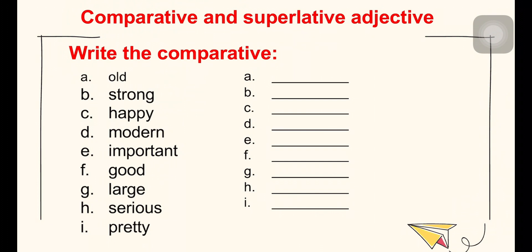Write the comparative: 'old' becomes 'older', 'strong' becomes 'stronger', 'happy' becomes 'happier' — change Y to I and add '-er'. 'Modern' becomes 'more modern', 'important' becomes 'more important', 'good' becomes 'better', 'large' becomes 'larger', 'serious' becomes 'more serious', 'pretty' becomes 'prettier'.